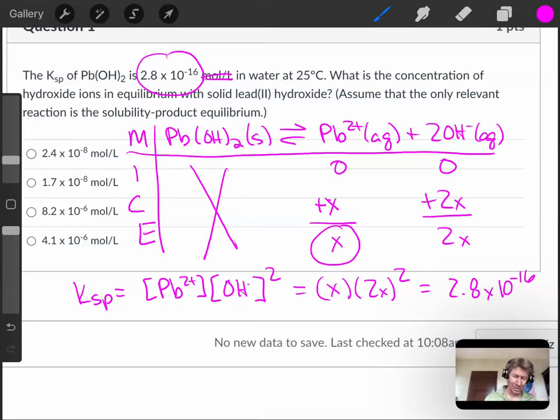It's asking us about the concentration of hydroxide ion. So you're going to have to take whatever you get for x and multiply it times 2, and hopefully it will be one of the multiple choice answers.